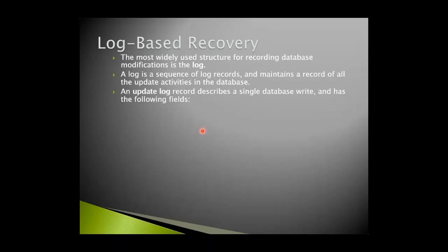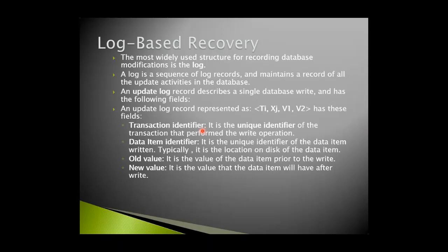First, we will look at the structure of a log record called the update log record. The update log record describes a single database write and has the following fields. Whenever there is a write operation, an update log record is maintained for every data item for that particular transaction. The update log record is composed of four fields: TI, XJ, V1, and V2. TI signifies the unique identifier of the transaction that performed the write operation. XJ denotes the data item identifier — the unique identifier of the data item written, typically its location on disk.